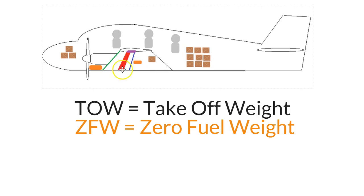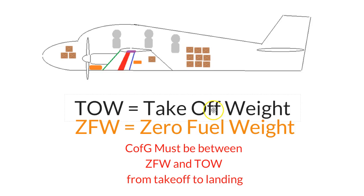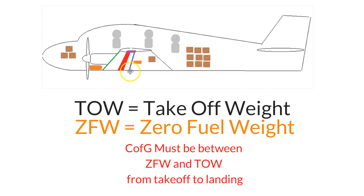Here's the really crucial thing to understand about takeoff weight and zero fuel weight: once you calculate your weight at takeoff and the weight with zero fuel left, the center of gravity absolutely must, for the entire time the aircraft is in the air between takeoff and landing, fall within the allowable CG range for whatever weight it's at. The CG must be within limits between zero fuel weight and takeoff weight for the entire flight.